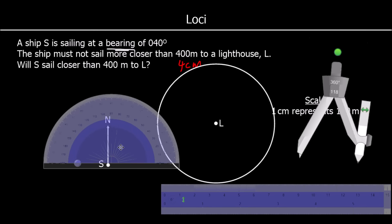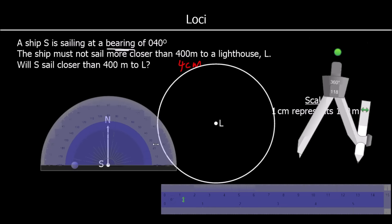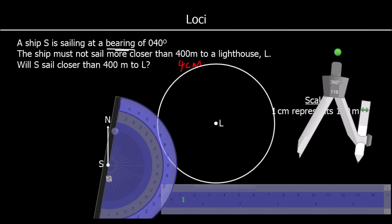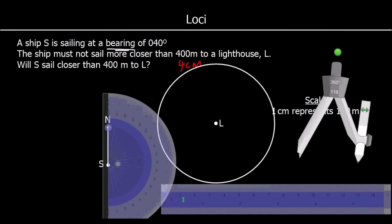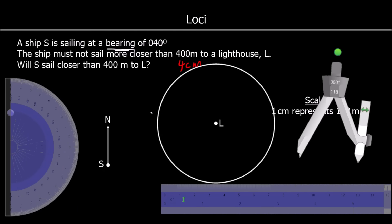So it's a 40 degree angle here. So we need a protractor. We're going to spin it around. Line up the center of the protractor with our north line at 0, and we're going around 40 degrees. Which is to here. And we'll draw a straight line. So it goes into the circle. Our line goes into the circle, so it does go closer than 400 meters to the lighthouse.